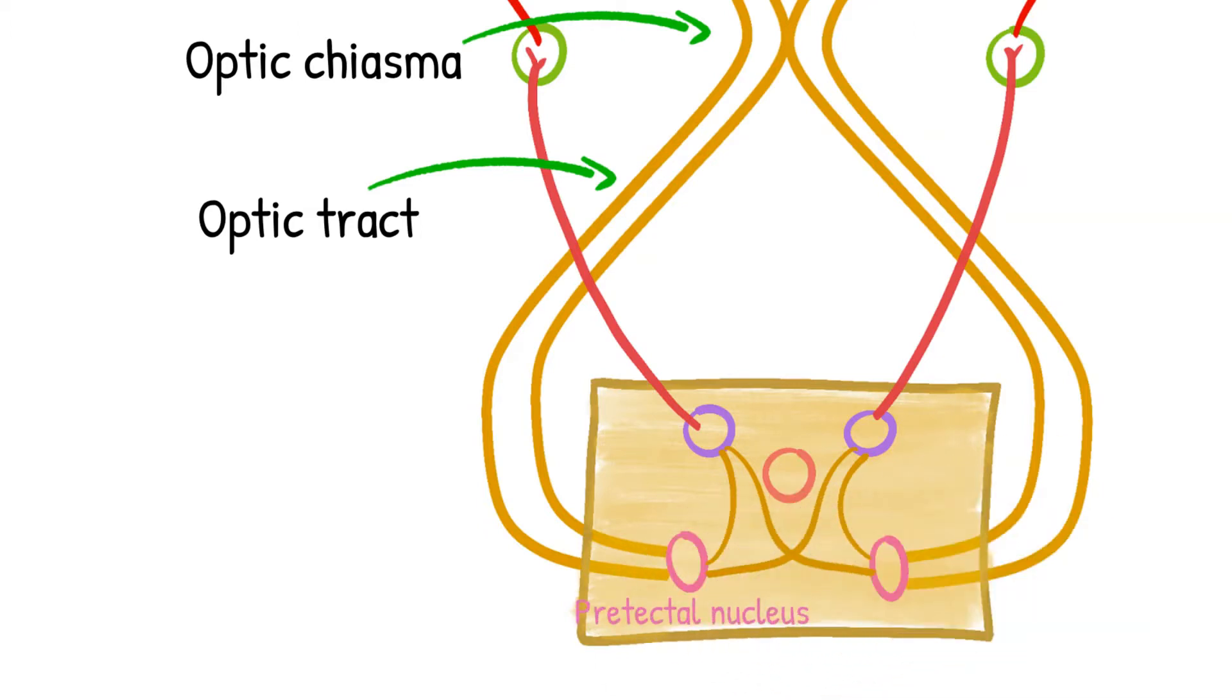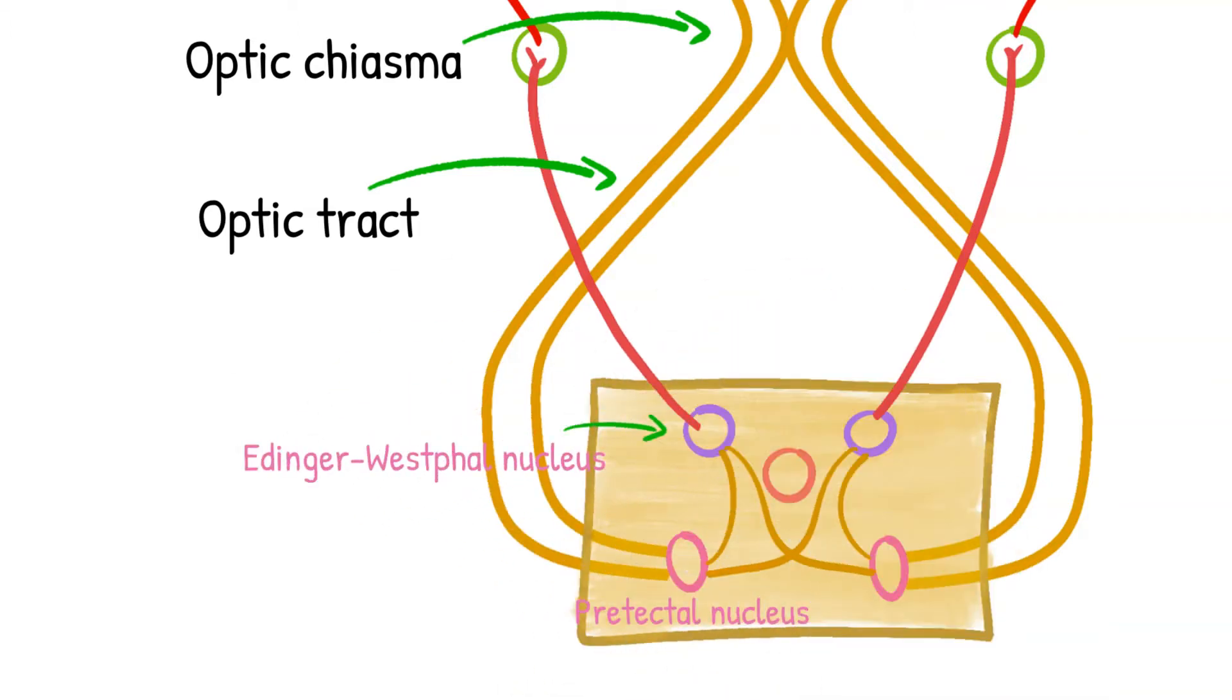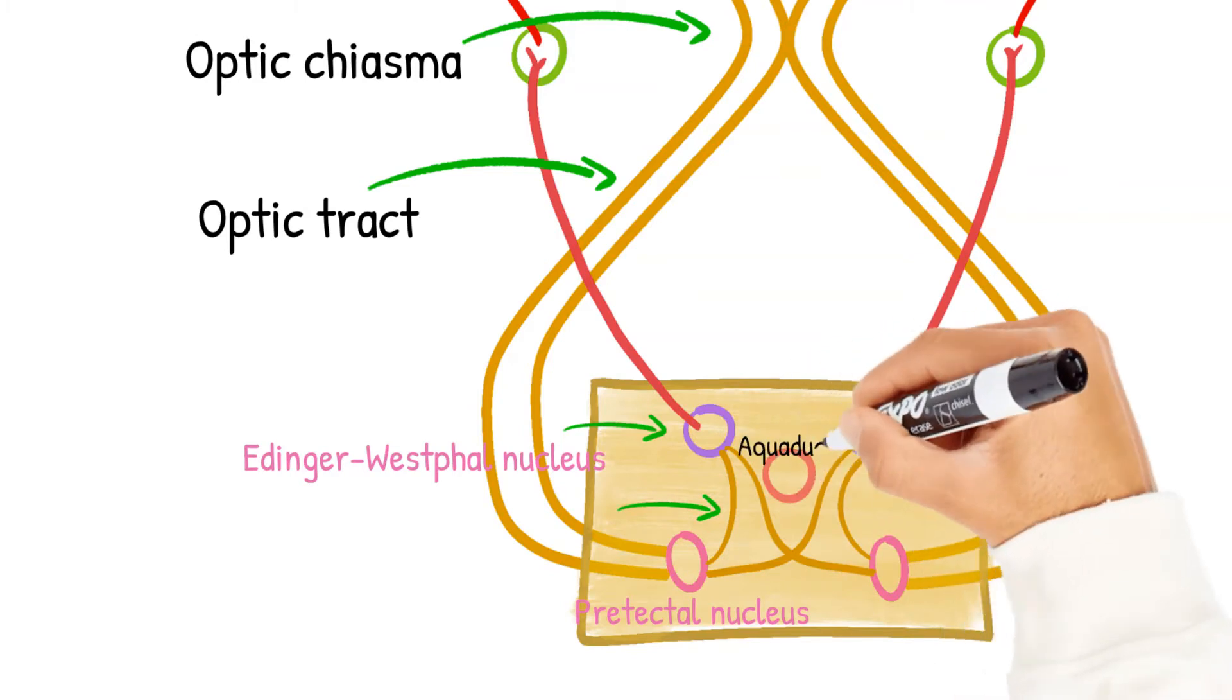The pre-tectal nuclei are connected to the Edinger-Westphal nucleus on both sides. Half of the postsynaptic fibers from the pre-tectal area curve around the periaqueductal gray matter to terminate in the ipsilateral Edinger-Westphal nucleus.